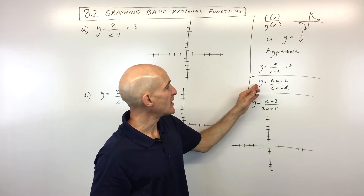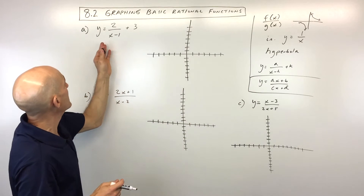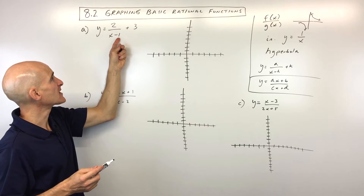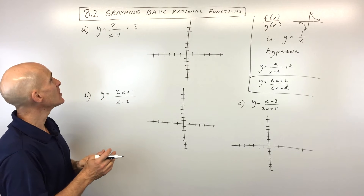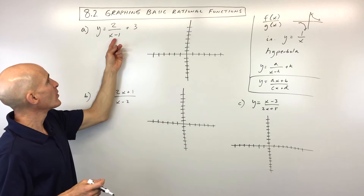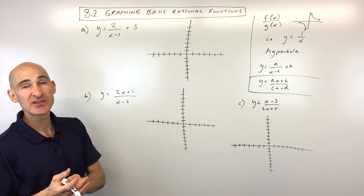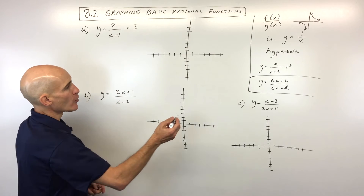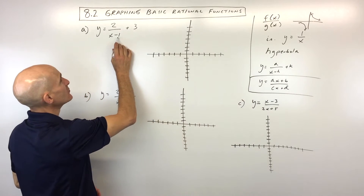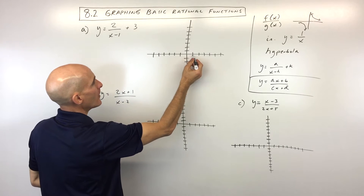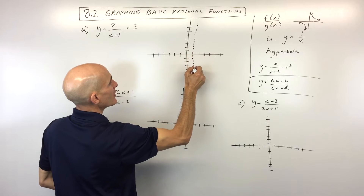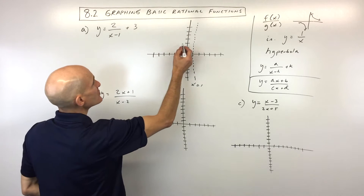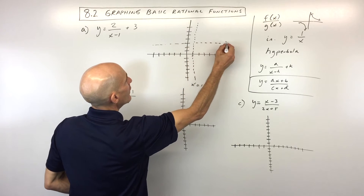Let's look at an example. For y equals 2 over x minus 1 plus 3, the denominator x minus 1 cannot equal zero, so x equals 1 is our vertical asymptote. The 3 shifts the graph up 3 units, giving us a horizontal asymptote of y equals 3. The 2 is a vertical stretch since it's greater than 1.